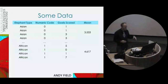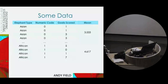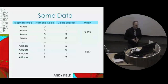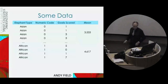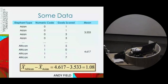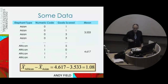I've assigned Asian elephants a code of zero and African elephants a code of one. So I'm not putting the words 'Asian' and 'African' into the model — I'm putting in the numerical equivalent: zeros and ones. Zero means Asian elephant, one means African elephant. The difference between the two means is 4.6 minus 3.53, which gives us 1.08. That's an important value to remember for the slides that are coming.